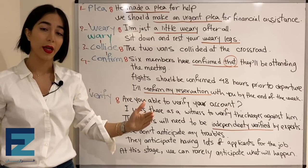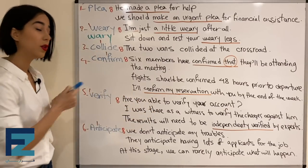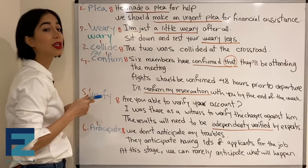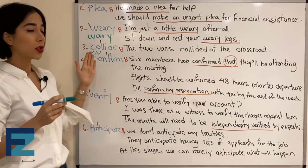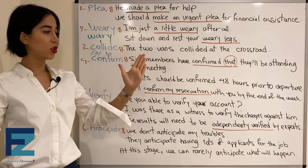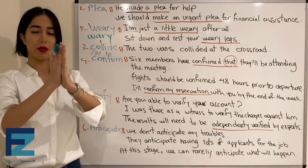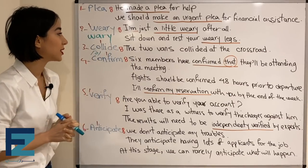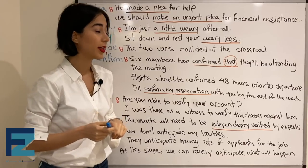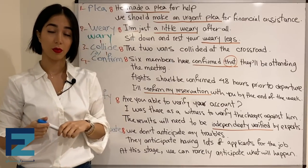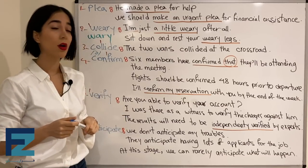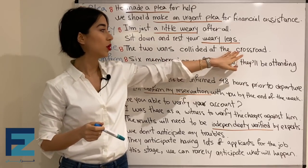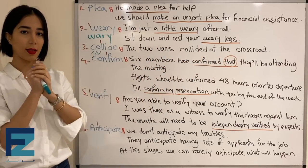Number three: collide. The stress is on the second syllable and the sound of O here is a schwa — collide. Collide means when two things hit each other. For example: 'The two vans collided at the crossroad.' یعنی اون دوتا وان با هم توی چهارراه برخورد کردن.